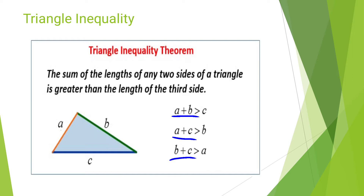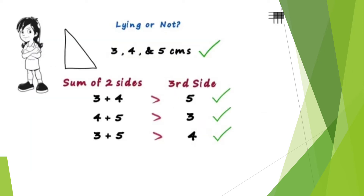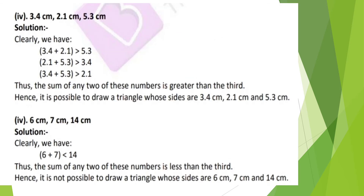This is the Triangle Inequality Theorem — the sum of any two sides of a triangle is greater than the third side. Simple example: if one side is 3 and another is 4, then 3 + 4 = 7, which is greater than 5. Also, 4 + 5 = 9 > 3, and 3 + 5 = 8 > 4.